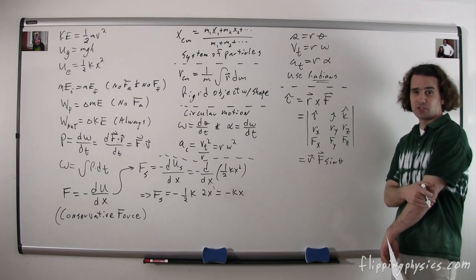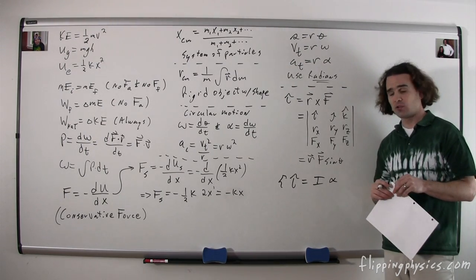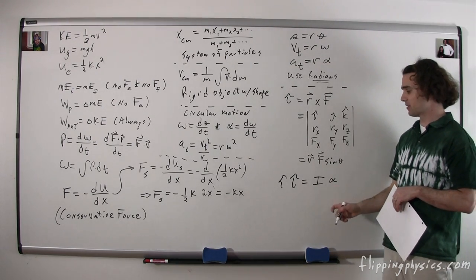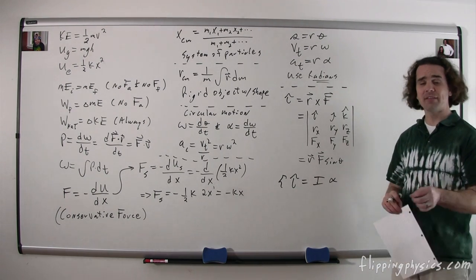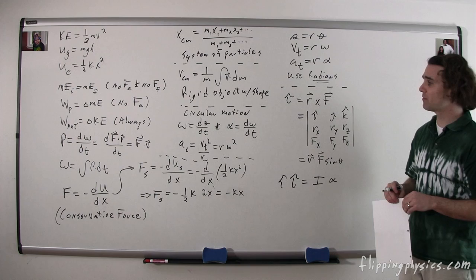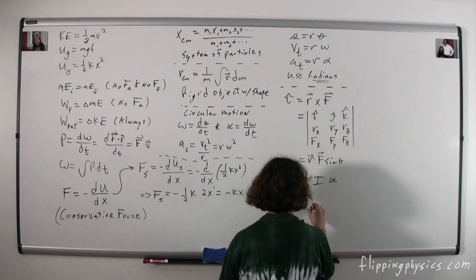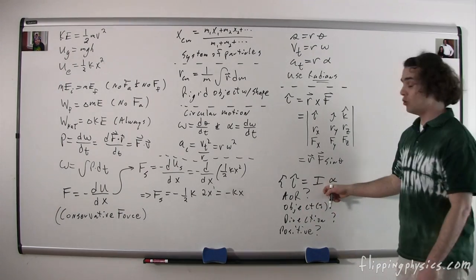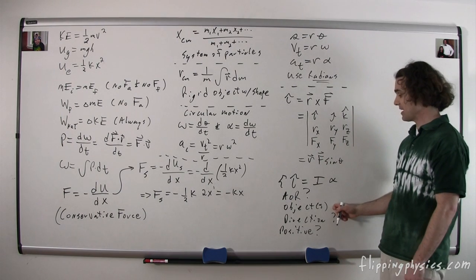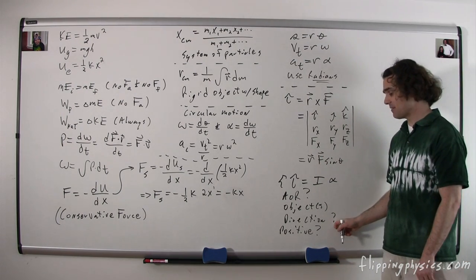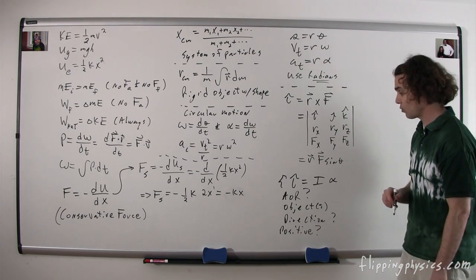We also have equations for the net torque. One is that it's equal to the moment of inertia times the angular acceleration. Whenever you sum the torques — just like when you sum forces — you need to define the axis of rotation, identify the object or objects, identify the direction you're summing in, and identify what the positive direction for torque is.